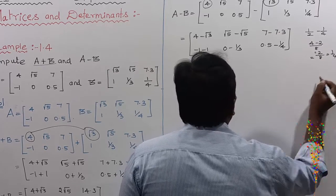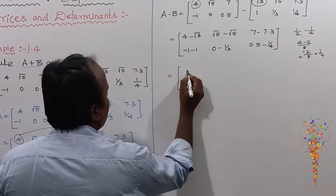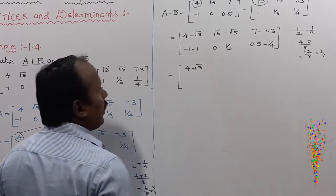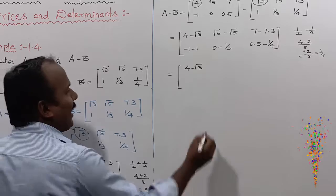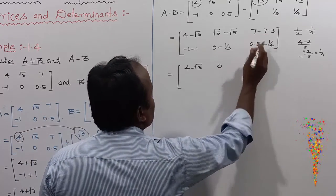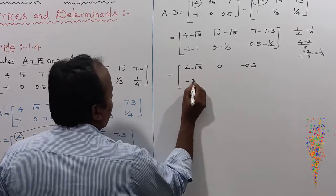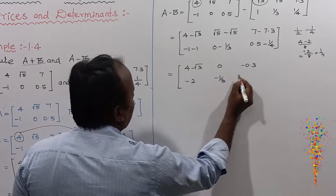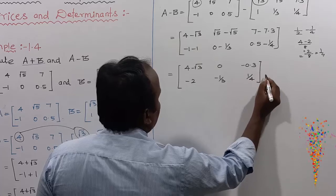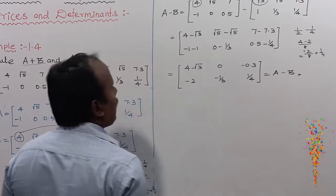So A minus B equals [[4-√3, 0, -0.3], [-2, -1/3, 1/4]]. That is a very simple question.